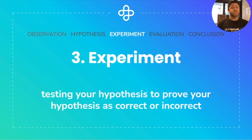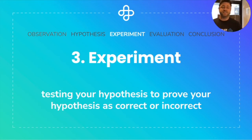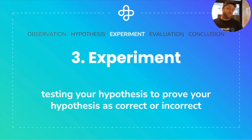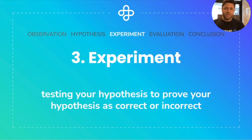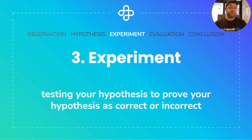The third step is the experiment — conducting an actual experiment. This is when you form a test to either prove or disprove your hypothesis. For me, my simple experiment was to go grab another phone charger — a new one that may not be broken — and replace my old, assumed-to-be-broken charger with it. If the new charger works, then I know that my hypothesis that my old charger was broken is indeed correct.